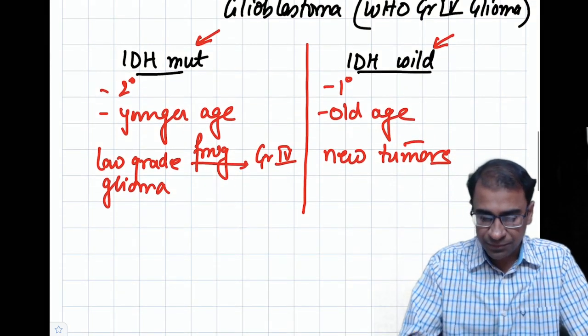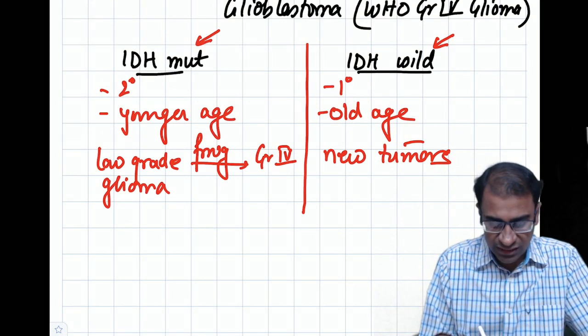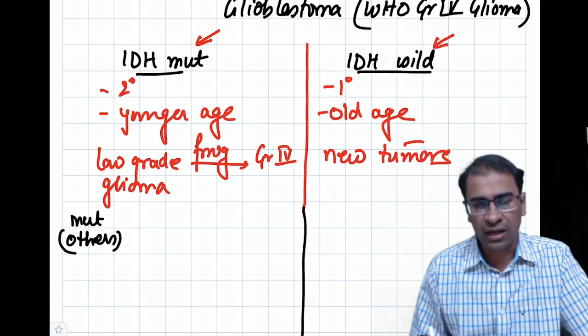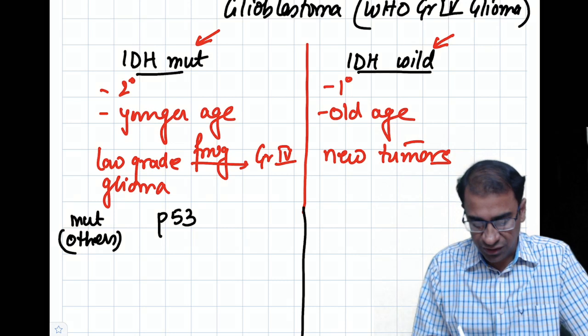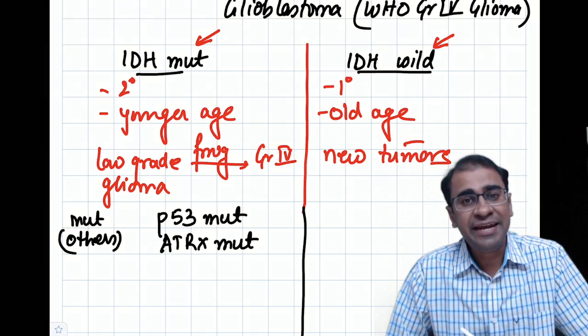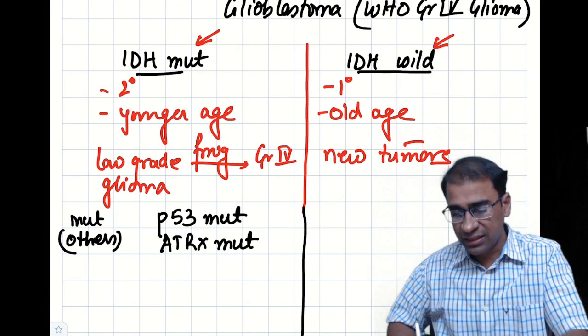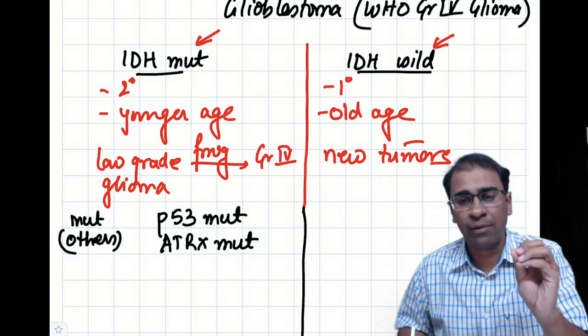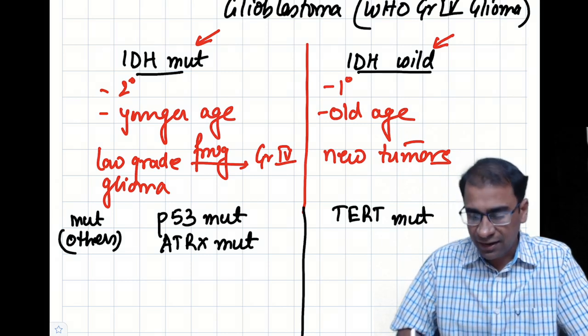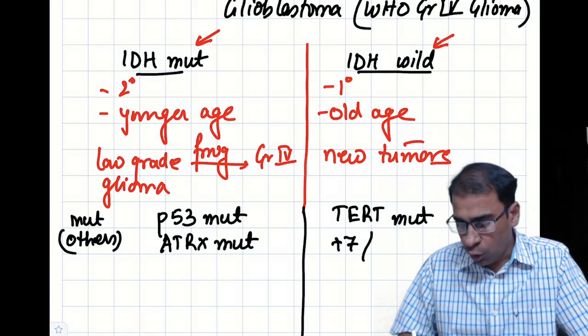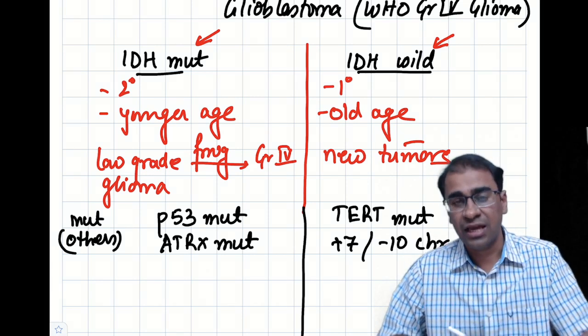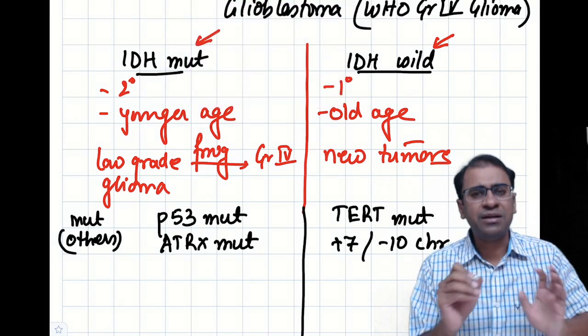There are some other mutations that can be seen in these gliomas. The secondary type has p53 mutation and ATRX mutation. But the primary or wild type glioblastoma has TERT mutation and a gain of chromosome 7 or loss of chromosome 10.